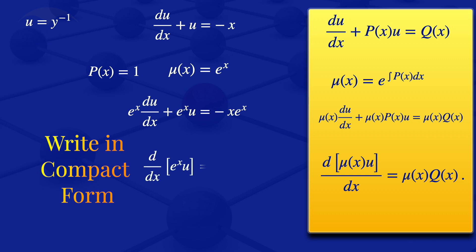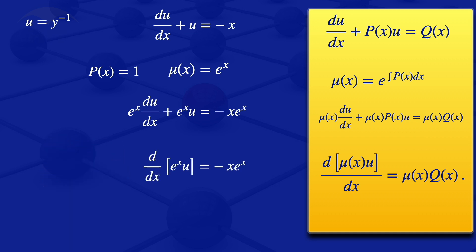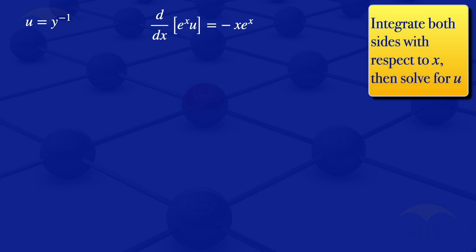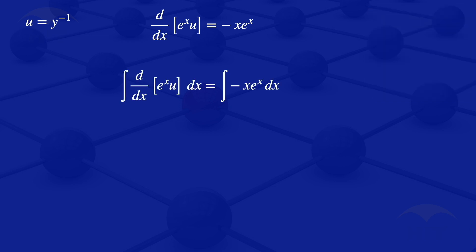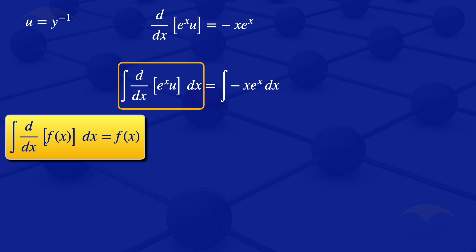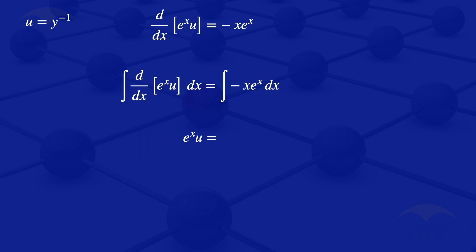Writing in compact form, we have the derivative of exponent of X multiplied by U with respect to X is equals to minus X multiplied by exponent of X. The next step is to integrate both sides with respect to X. The integral of the derivative of exponent of X times U with respect to X gives us exponent of X multiplied by U, since integrating a derivative returns the original function.